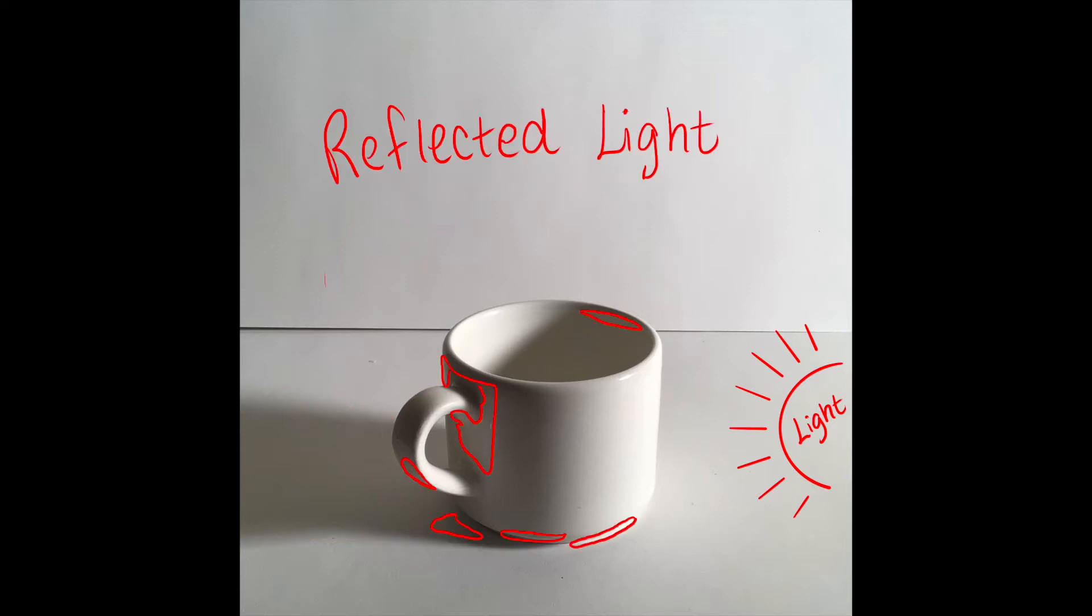Lastly, we have reflective light. Light waves are bouncy. Reflective light is light that is being bounced back onto an object from some other object. It is a weak light source and is present in the shadows, typically along the contours.